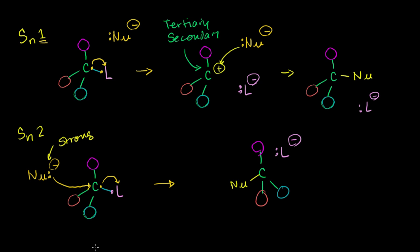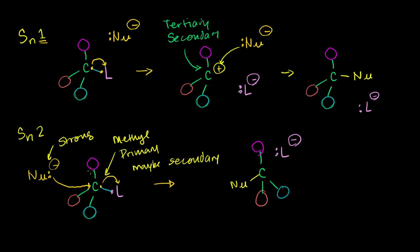SN2 requires a strong nucleophile and can't have a lot of steric hindrance — the substituents can't block the nucleophile from attacking. SN2 works best with a methyl or primary carbon, and maybe secondary if conditions are right. To summarize: weak nucleophile → think SN1; strong nucleophile → think SN2. Tertiary or secondary carbon → SN1. Methyl or primary carbon with a strong nucleophile → SN2.